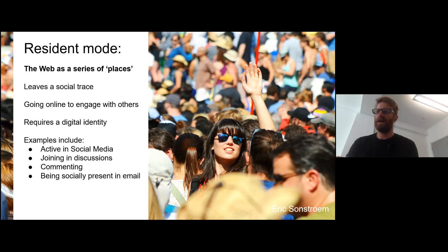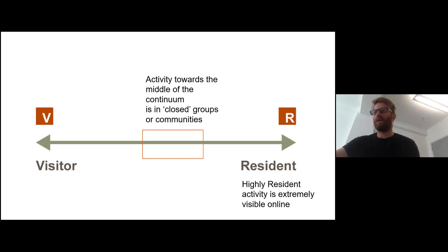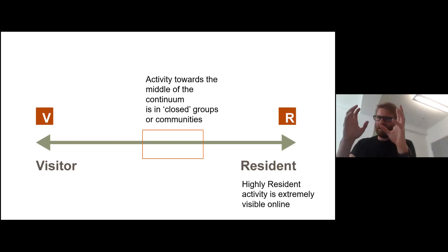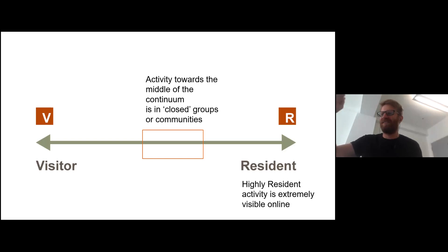In the middle of the continuum is a really important area where people are resident within a known network or community — which you could argue is what we're doing here. Some of what we do online like Twitter is just out there for anyone to see, but a lot of what we do around education online is within a closed group or community. When web 2.0 and social media came out, people felt the whole web was just narcissists making friends with strangers, but that was only the visible bit — an enormous amount happens effectively behind closed doors but is still resident.